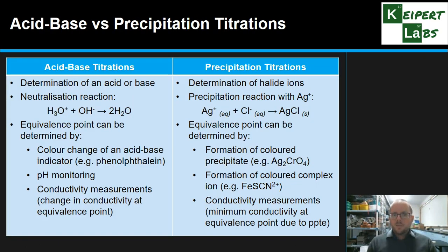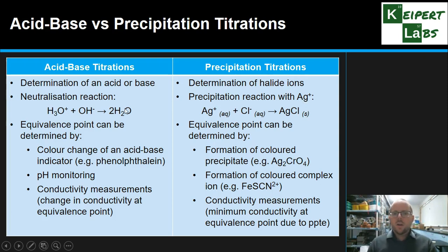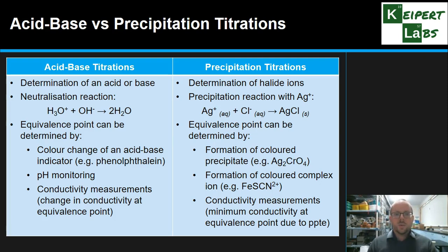Let's compare side-by-side with acid-base titrations, which are more familiar. For acid-base, we're determining the concentration of an acid or a base; for precipitation, we're looking at halide ions — chloride, bromide, iodide. We've got a neutralisation reaction between hydronium and hydroxide ions, or we're looking at precipitation with silver ions and the formation of a cloudy insoluble compound. For equivalence point detection, with acid-base titrations we're using an acid-base indicator like phenolphthalein, litmus, methyl orange, methyl red, or bromothymol blue — a colour change as the pH changes.